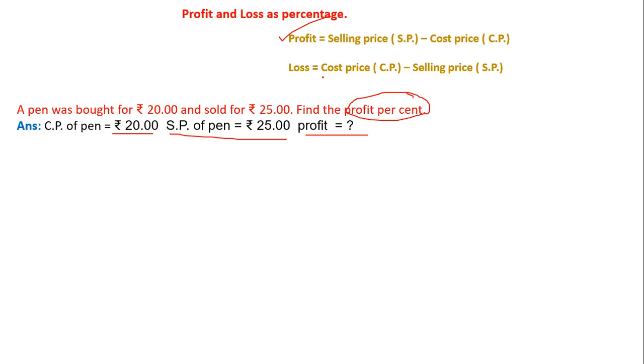So first I am taking profit equals selling price minus cost price. Substituting the values, that is rupees 25 minus rupees 20. After subtracting rupees 20 from 25, I will get the answer as rupees 5. This is the profit.